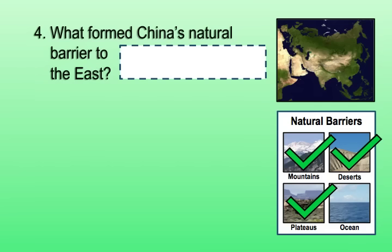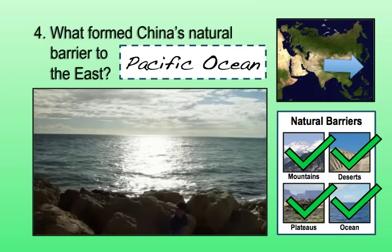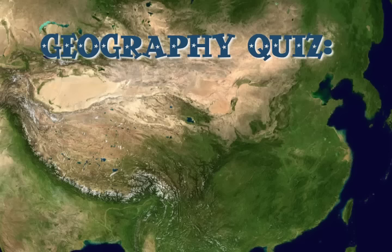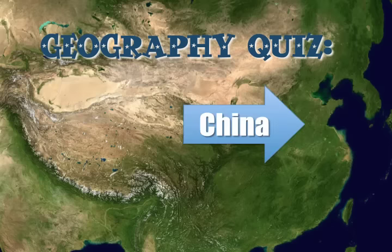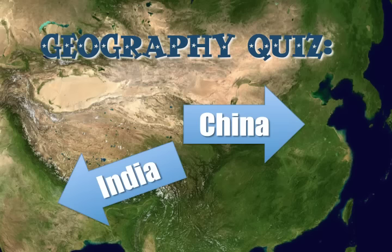The last natural barrier I want to talk about today is the natural barrier to the east. If you look at the map, you can tell that we have the Pacific Ocean located to the east as well. Let's pause for a second and look at this from a different perspective — specifically, we're looking down on Asia. This is a composite satellite map of Asia, and we've got China over here in the corner.